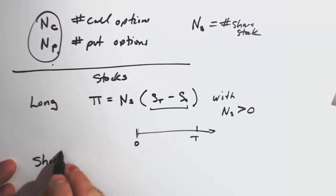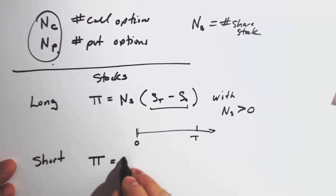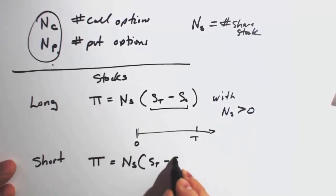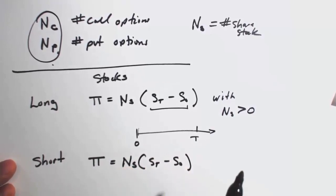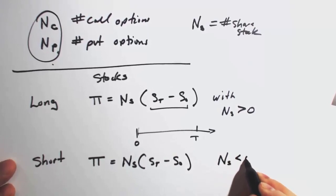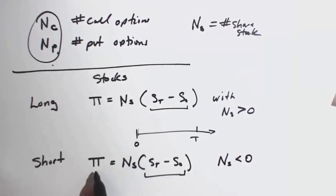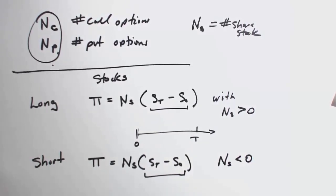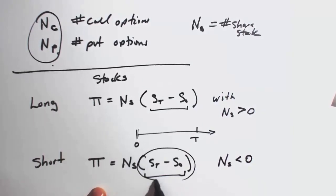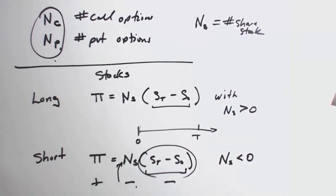If you do a short position on a stock, your profit is the same formula: the number of shares times ST minus S subscript zero. But here NS is going to be less than zero — negative. So when you have a capital gain on the stock and NS is negative, you're going to lose. That's what happens when you short a stock — you want to sell it high and buy it back later at a lower price. When you short a stock and the stock goes up, you lose. A negative number for NS times a negative capital gain turns out to be a positive profit.